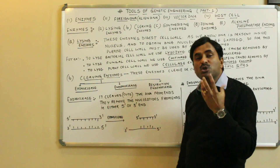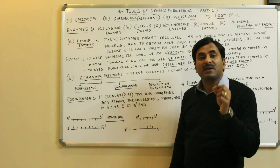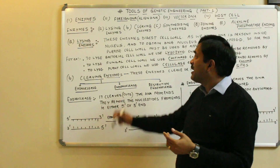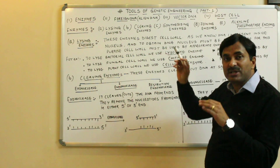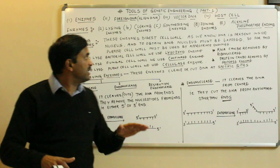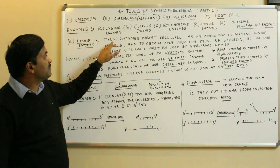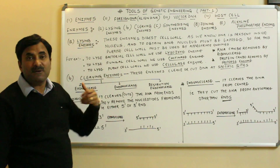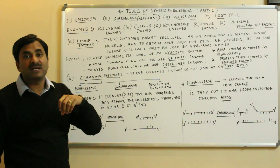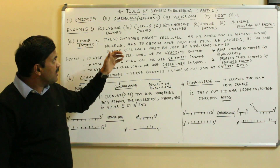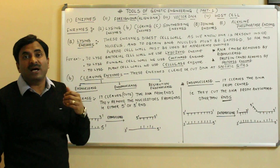The word 'lysing' comes from 'lyses,' which means breakdown. Lysing enzymes are enzymes that digest the cell wall. They are concerned with the breakdown of the cell wall. Not only the cell wall — lysing enzymes can also break down certain macromolecules such as RNA and protein. Their use in genetic engineering is to allow isolation of DNA from the cell.